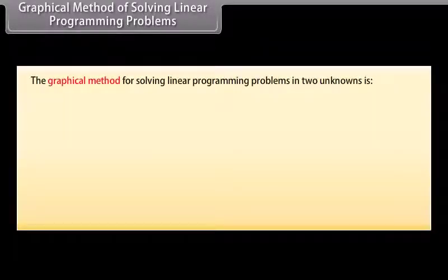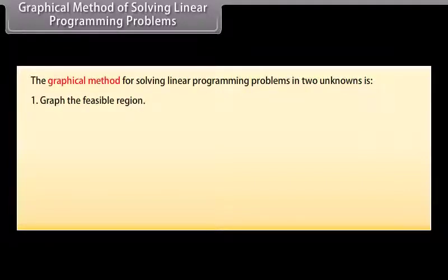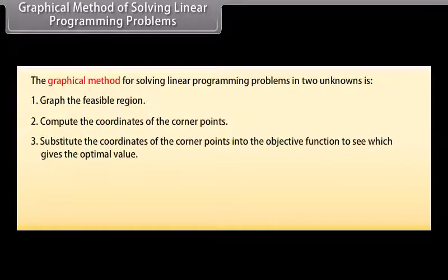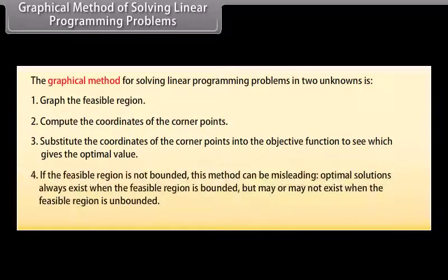The graphical method for solving linear programming problems in two unknowns: (1) Graph the feasible region. (2) Compute the coordinates of the corner points. (3) Substitute the coordinates of the corner points into the objective function to see which gives the optimal value. (4) If the feasible region is not bounded, this method can be misleading. Optimal solutions always exist when the feasible region is bounded, but may or may not exist when the feasible region is unbounded.